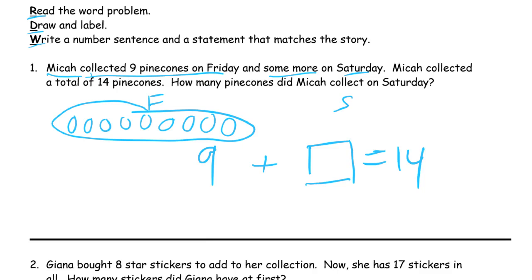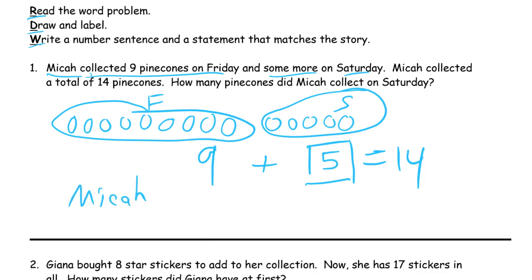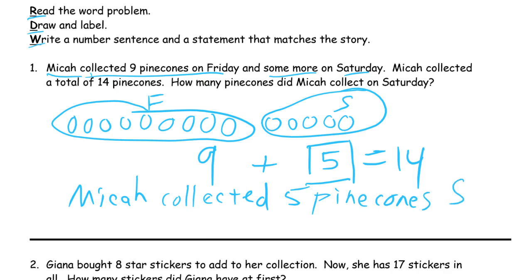Continuing from nine: ten, eleven, twelve, thirteen, fourteen. So these are the Saturday pine cones. Now I can just see how many there are — there's five. Micah collected five pine cones on Saturday. I'm just going to write SAT for Saturday because I'm going to run out of room here.